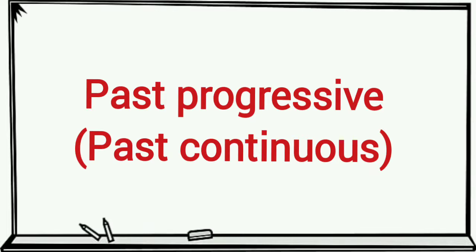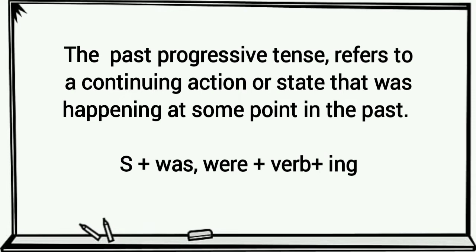Past progressive. The past progressive tense refers to a continuing action or state that was happening at some point in the past.